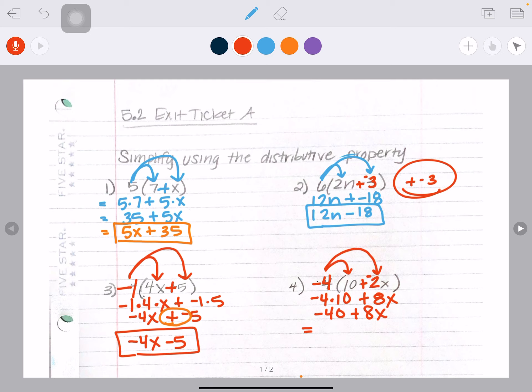But I want standard form. So I'm going to rearrange it with my x's first. So it's 8x minus 40. And that's my final answer.